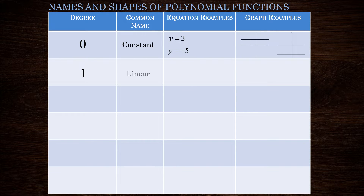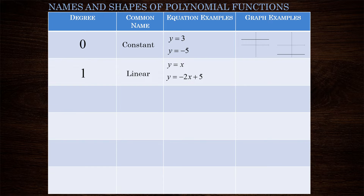Moving on to degree one, these are the linear functions and we have an exponent on x that is no higher than one. y equals x is the most basic example, but we can also have linear functions like y equals negative two x plus five, which has an x term and also a constant term. The graphs of this type of function are straight lines, but this time we have slope.